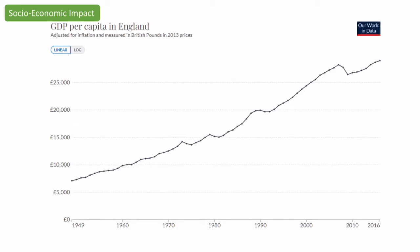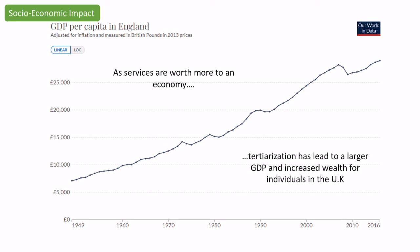If we look at the UK since the 1970s, we've actually seen that GDP per capita — the amount of money people have per person — has actually gone up. This is because services are worth more to the economy than secondary and primary jobs. So as we've shifted towards services, people individually are wealthier and the country is wealthier overall. So we can see the shift from deindustrialisation and the loss of industry to the rise in services has both positive and negative impacts, and some of those can be concentrated in certain areas rather than others.